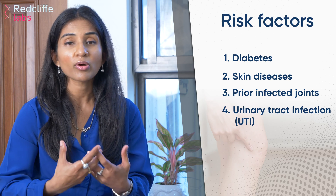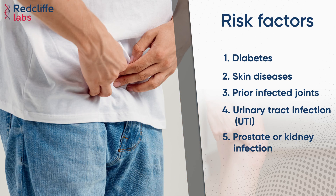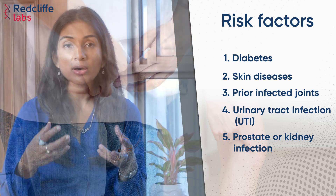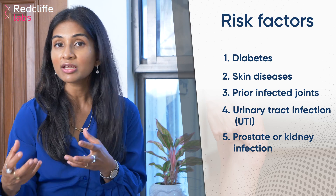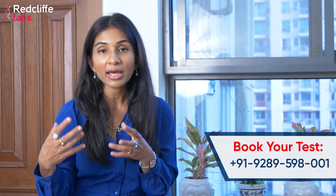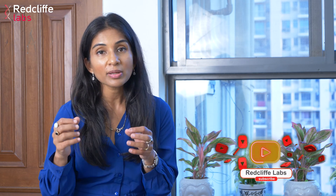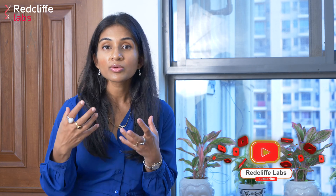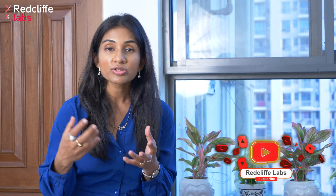Patients who have urinary tract infections, like elderly patients with prostate problems or kidney abnormalities, can develop urine infection and subsequently a bacteremia, which can also result in septic arthritis, especially in elderly people.